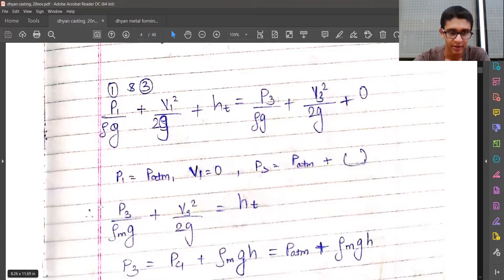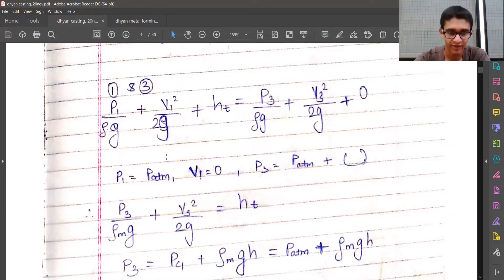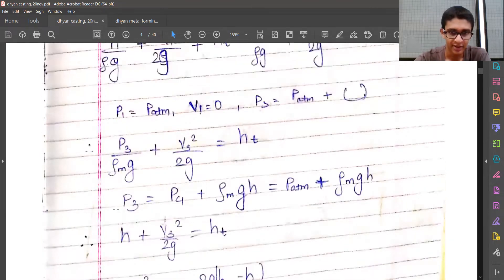Let's apply: p3 over ρm times g plus v3 squared over 2g equals ht. This is because p1 was patm, v1 was zero, and ht remained. We'll take p3 with respect to patm, so these terms get cancelled. What remains is v3 and ht.